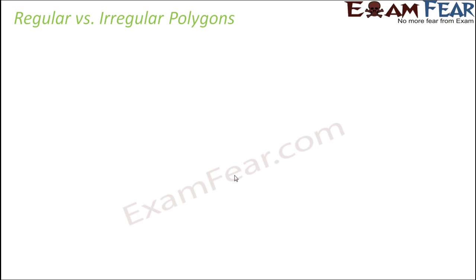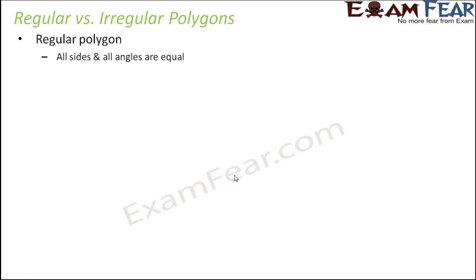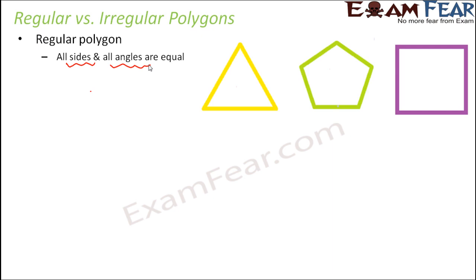Now let us discuss the various categories of polygons. Polygons can be regular or irregular. For a regular polygon, all sides and all angles must be equal. For example, a polygon with three sides is called a triangle. Not all triangles have all sides and angles equal, but an equilateral triangle always has all three sides equal and all angles equal. So an equilateral triangle is an example of a regular polygon.